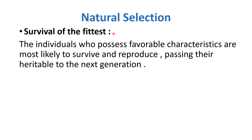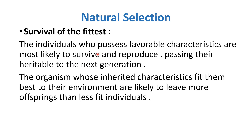The fourth point of natural selection is survival of the fittest. The individuals who possess favorable characteristics are most likely to survive and reproduce, passing their heritable characteristics to the next generation. The organisms whose inherited characteristics fit them best to their environment are likely to leave more offspring than the less fit individuals.